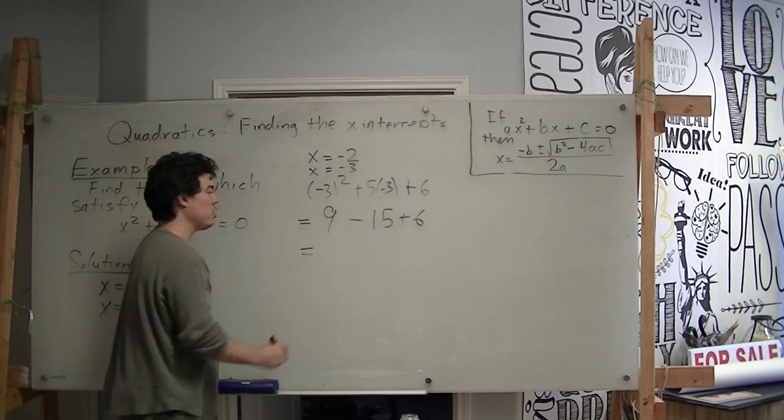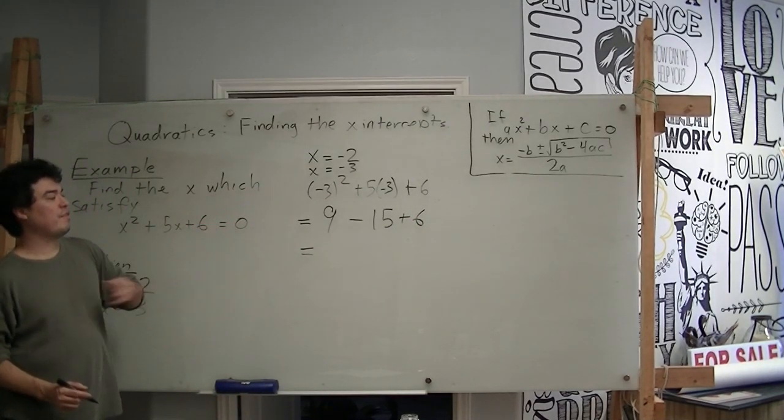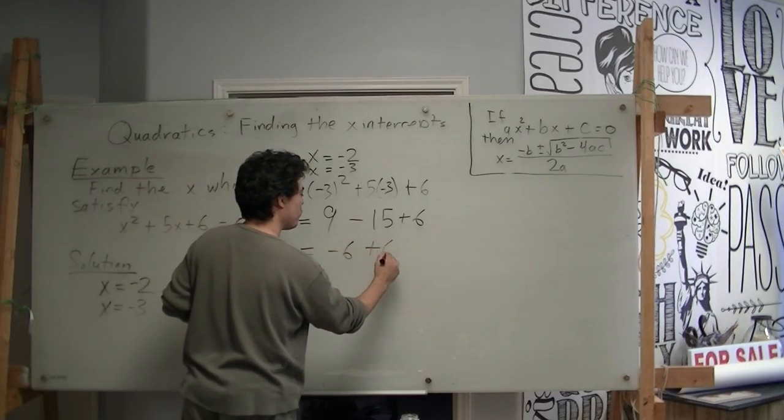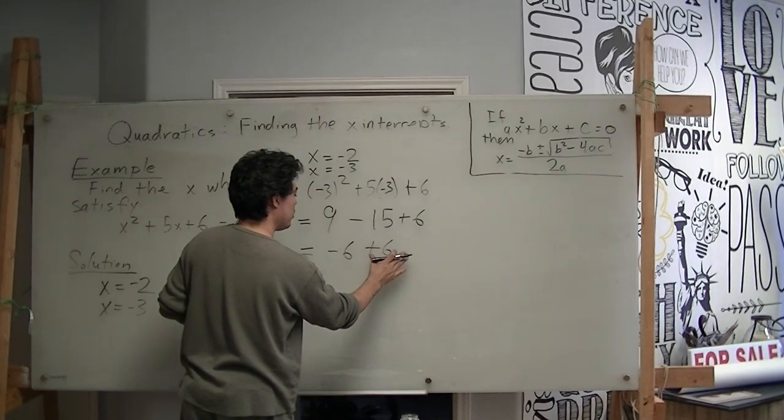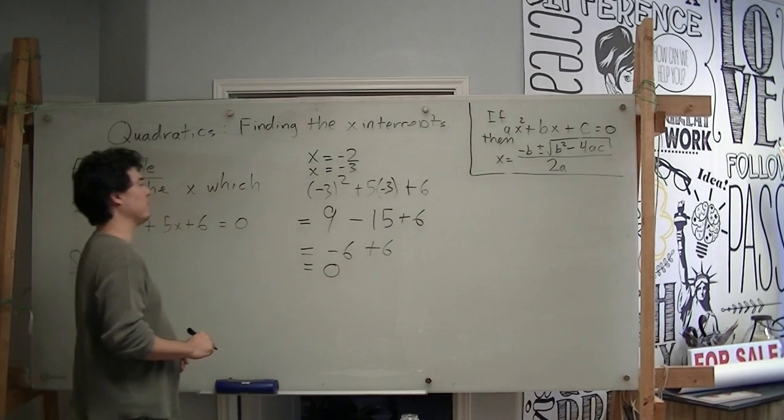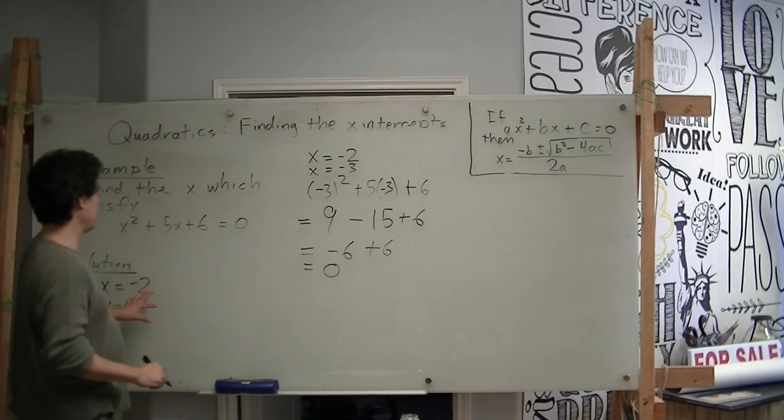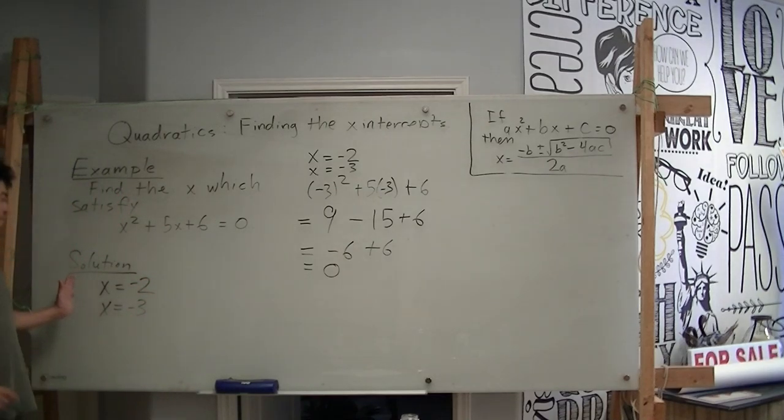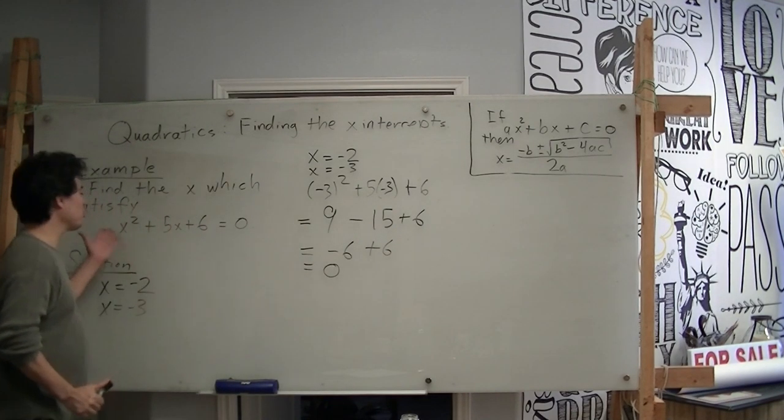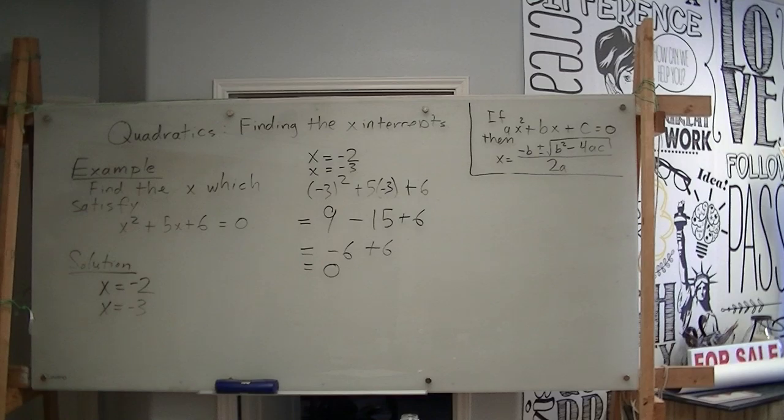Now, 9 minus 15 is negative 6. And then we add our 6, right, from over here. We bring this down. And then, of course, here again, we can see that indeed this is 0. And therefore, both of these values that we got, both of these alleged x-intercepts are, in fact, x-intercepts. We've just shown that they do, in fact, make this equation x squared plus 5x plus 6 equals 0 true.